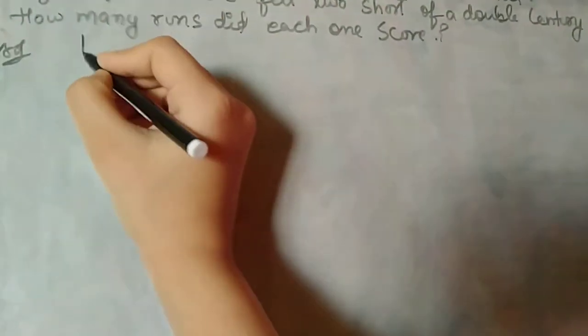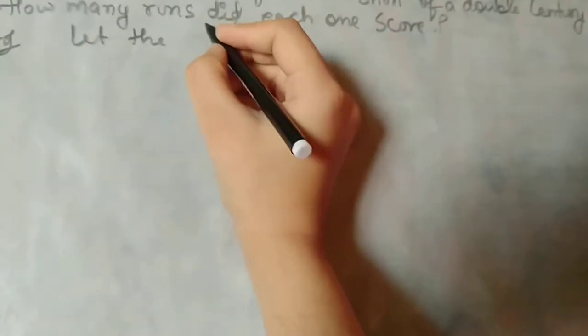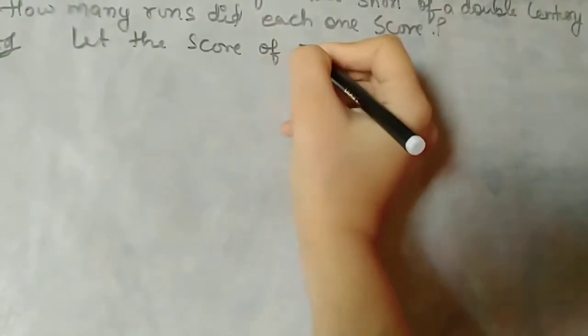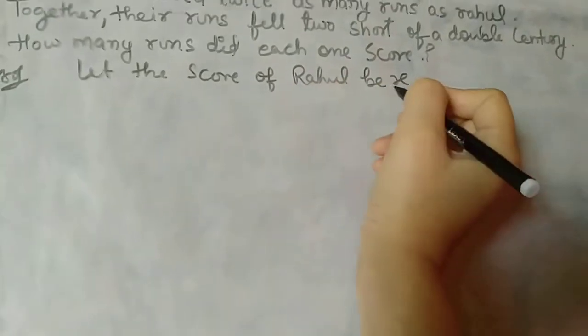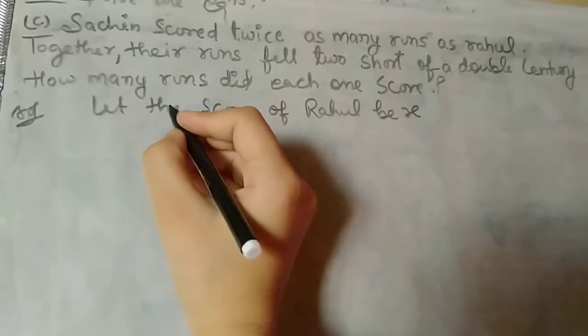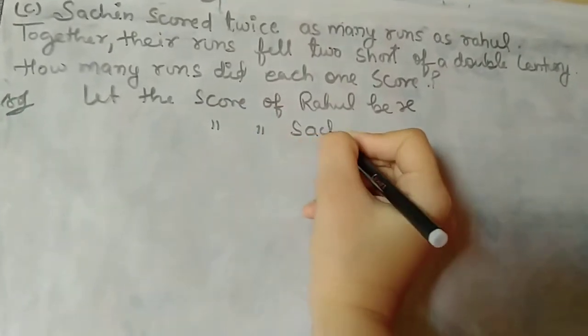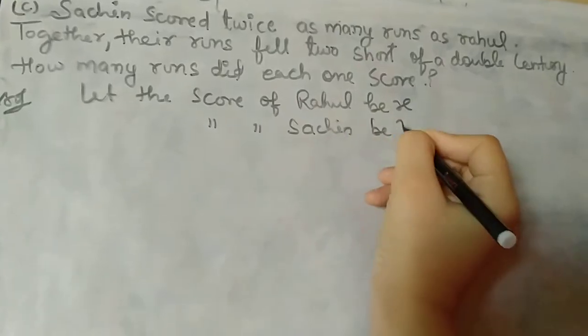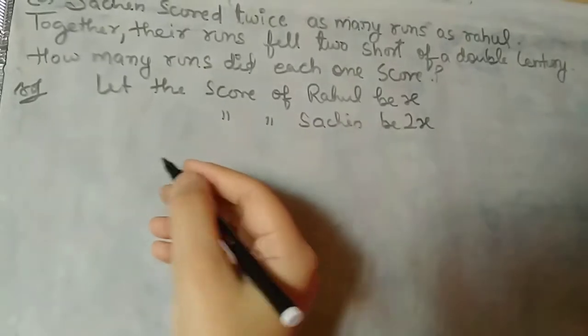Let the score of Rahul be x. If Rahul's score is x, then Sachin's score will be 2x, which is double or twice of Rahul's score.